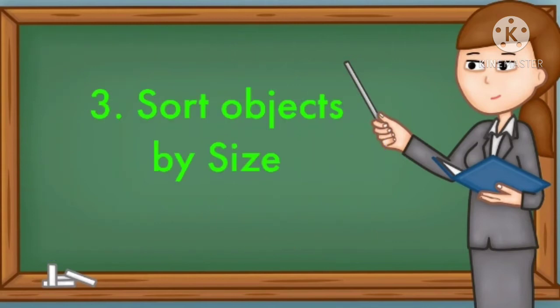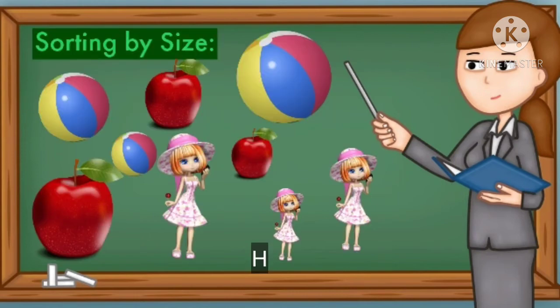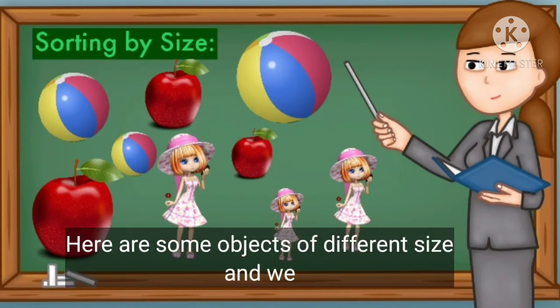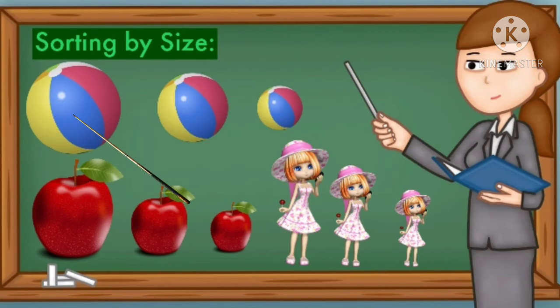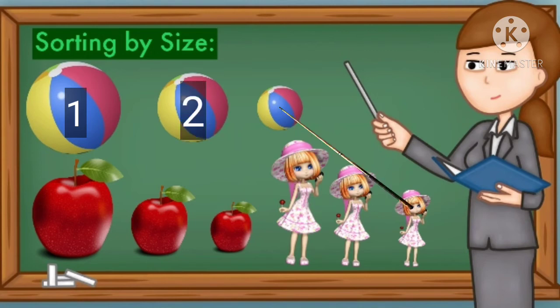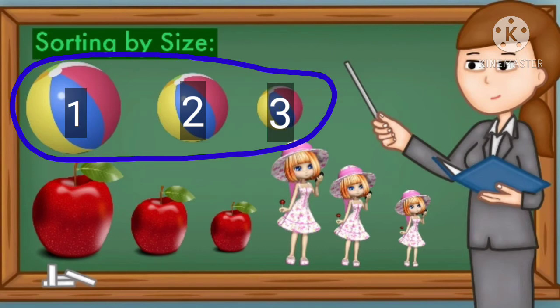Number three: sort objects by size. Here are some objects of different sizes, and we have to sort these by their size. This is the biggest one, so we have marked it one. This is smaller than one, so we have marked it two. This is smaller than two, so we have marked it three — sorted from one to three.